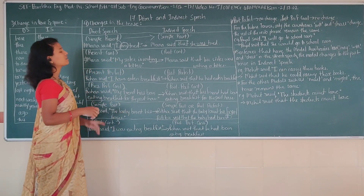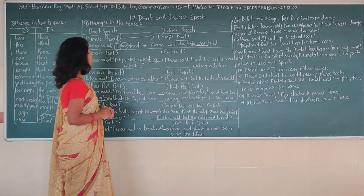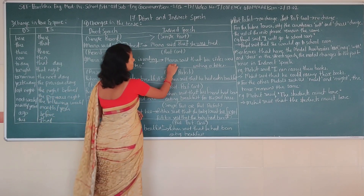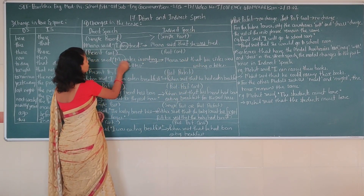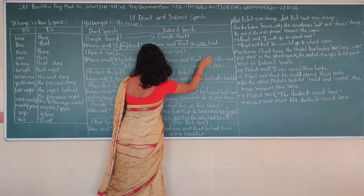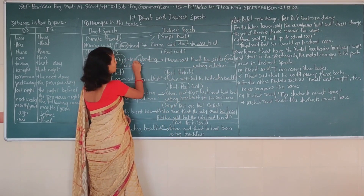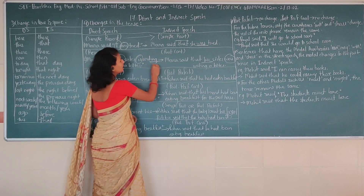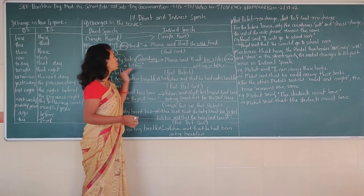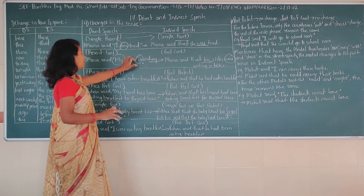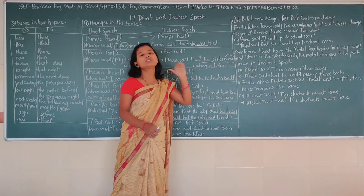In indirect speech, 'Meera said that her sister was writing a letter.' The pronoun changes from 'my' to 'her sister', and 'is' becomes 'was'. So 'is writing' becomes 'was writing' — you keep the 'ing' but change the auxiliary to past. Present continuous becomes past continuous: 'is writing' will become 'was writing'.